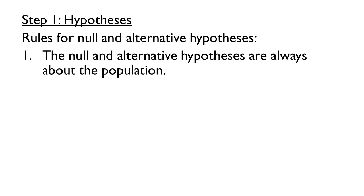First, the null and alternative hypotheses are always about the population. In other words, they should be written in terms of the population parameters — the betas — and you should not be referring to the estimates of the population parameters from the regression results. Comparing our statement to the model, we could reason that our hypotheses should be statements about beta 2, which describes the relationship between income and travel expenditures.